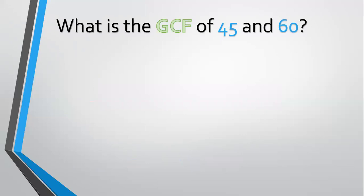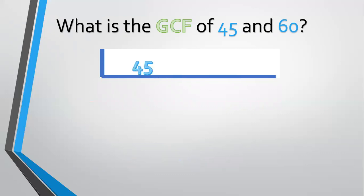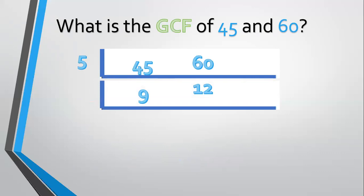Another example — how about 45 and 60? List them: 45 and 60. The common factor is 5. 45 divided by 5 equals 9. 60 divided by 5 equals 12. There's still a common factor — that is 3. 9 divided by 3 equals 3. 12 divided by 3 equals 4. Nothing more to divide, so the GCF equals 5 times 3 equals 15.